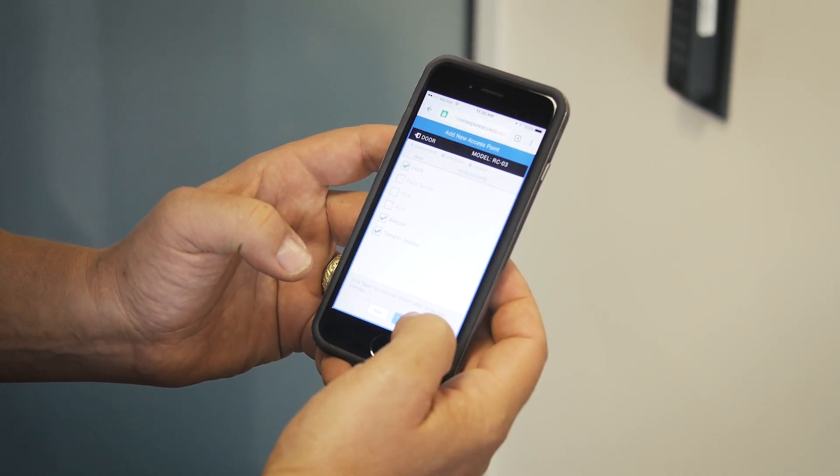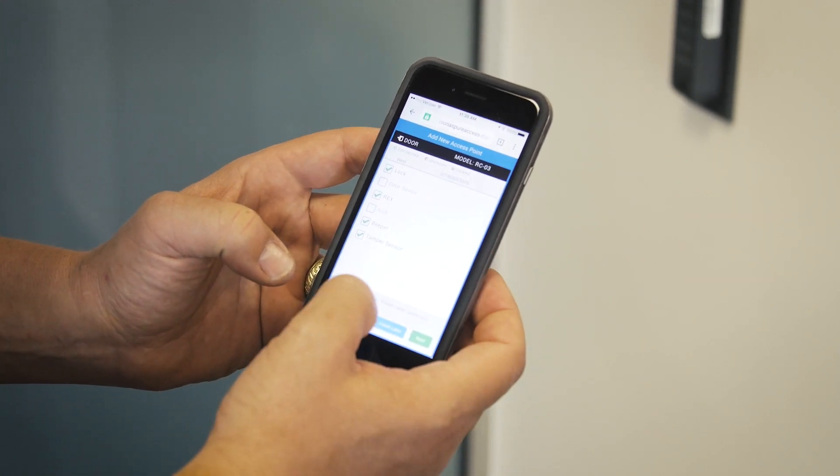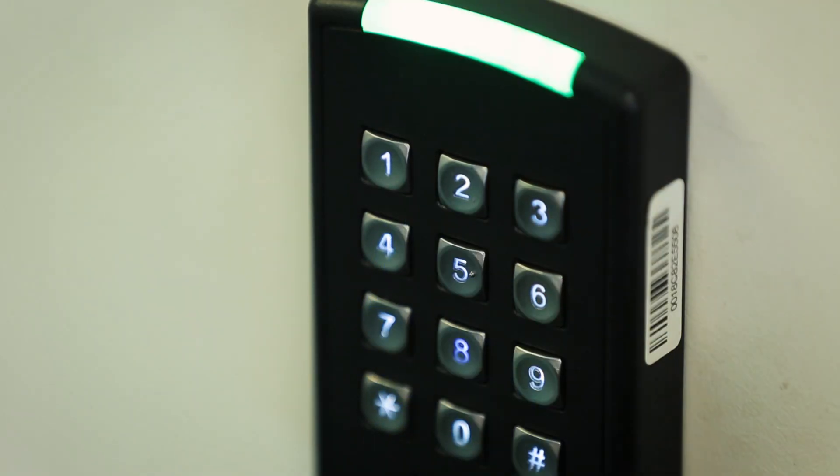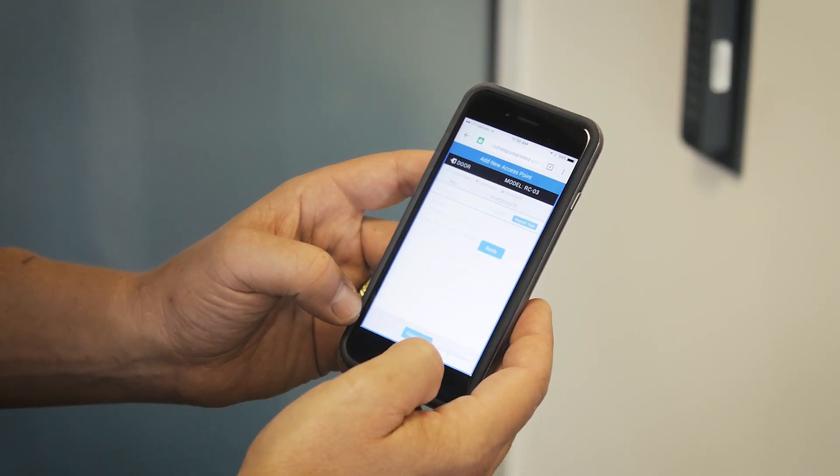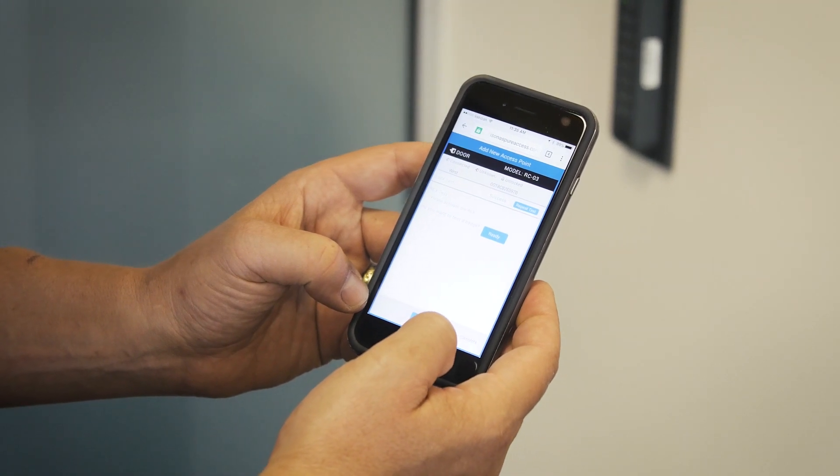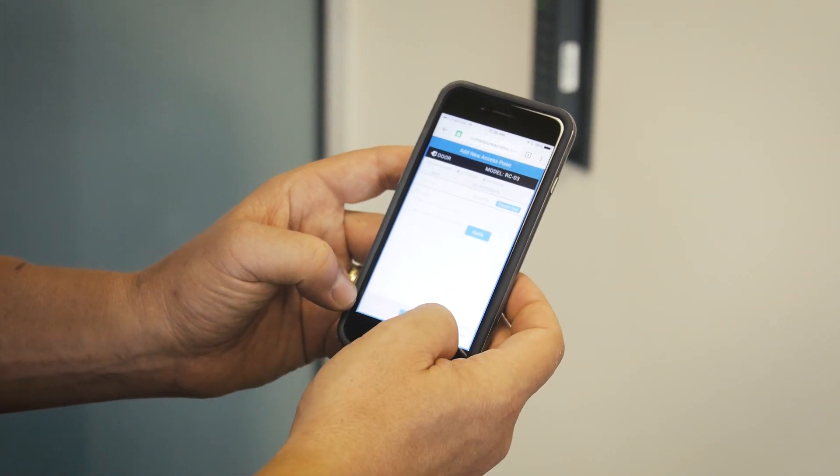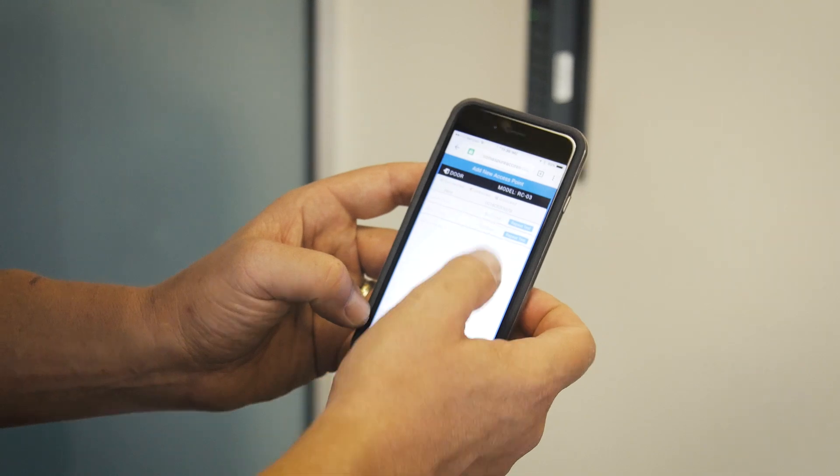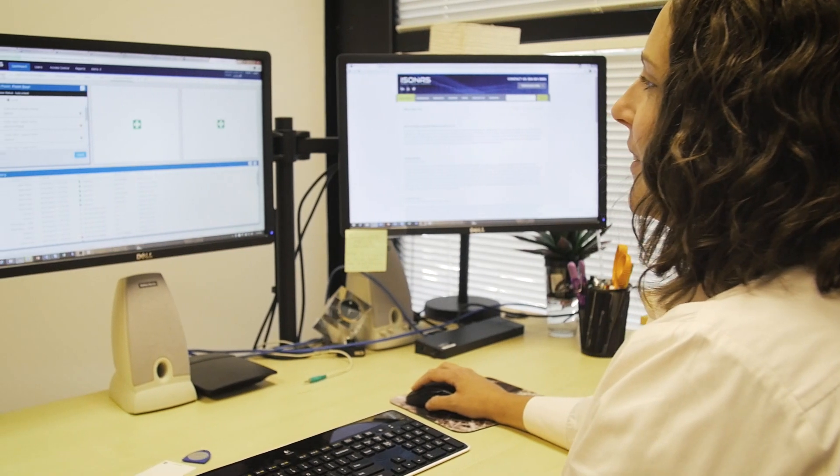Once all of your tests have checked out correctly, you will see in the software a door with a status of tested and connected. You can walk away with peace of mind knowing your door is fully configured correctly.